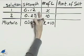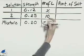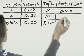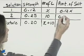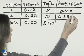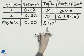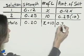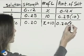The amount of salt is the product of the strength times the number of liters, 0.12 times x, 0.25 times 10 for the amount of salt in the second solution, and in the mixture, we'll have 0.20 times the quantity x plus 10.